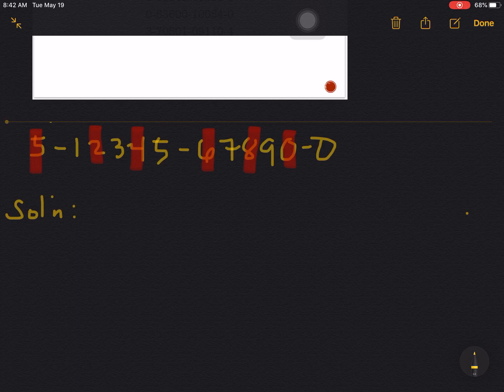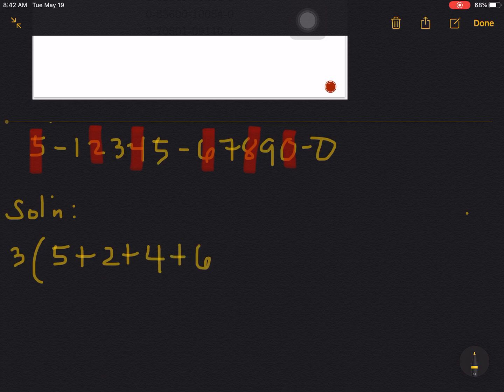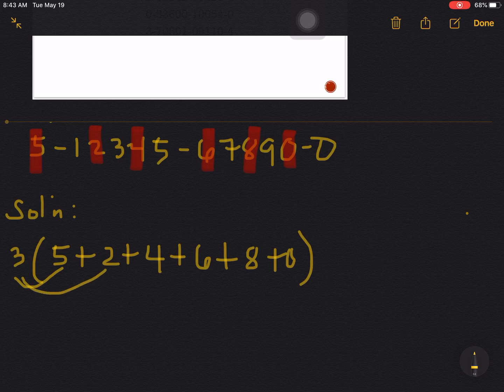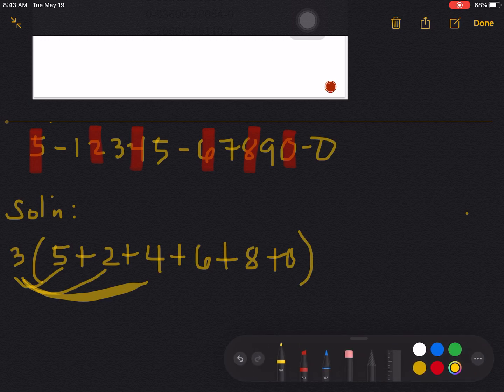So let's have the solution here. It says that we are to multiply three to the numbers on the odd positions—that would be the numbers five, two, four, six, eight, and zero. You might ask, how come I'm doing this? Why not three times five, three times two, three times four, and so on? Thanks to algebra, this is still fine for us because of distributive property.